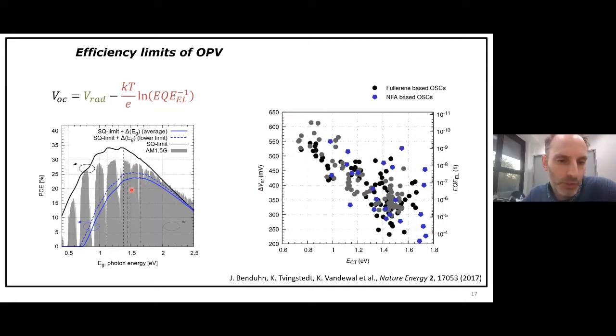this would reduce the maximum efficiency you can get with organics from 33 to 25. I think we would be very happy if we can get 25, but that would mean that we need very high external quantum photovoltaic external quantum efficiencies, very high fill factors of 90 percent, then we would reach here above 20 percent. So it's not impossible with organics to reach efficiencies above 20 percent.